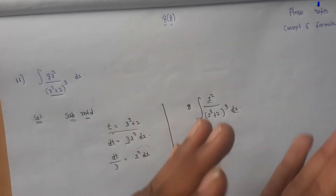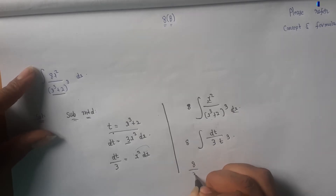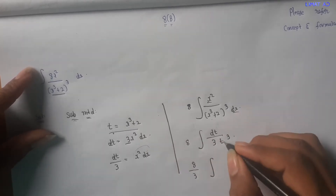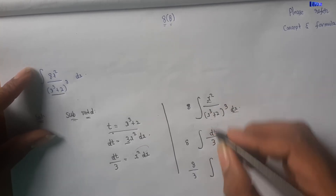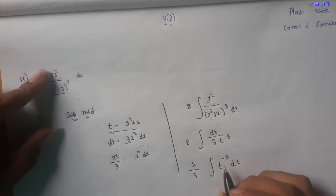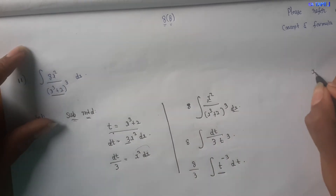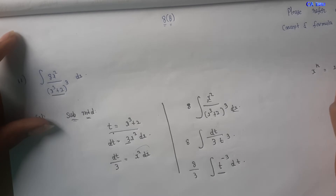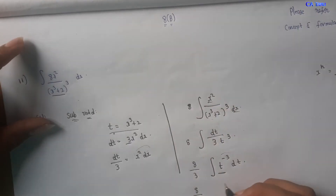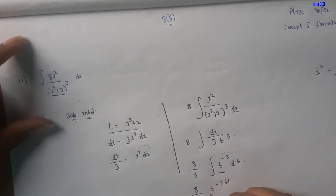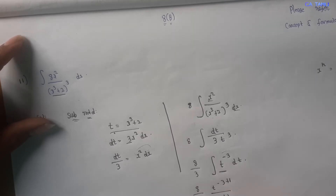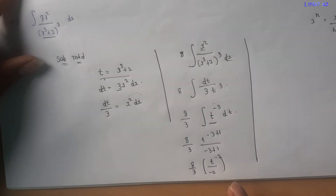This becomes the integral of (8/3) times t to the power of minus 3, dt. We apply the integral formula: integral of xⁿ equals xⁿ⁺¹ divided by (n+1). So we get 8 by 3, then t power minus 3 plus 1, which gives t power minus 2. This step is done.